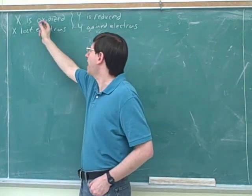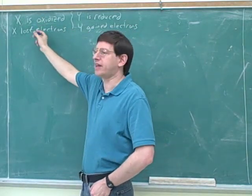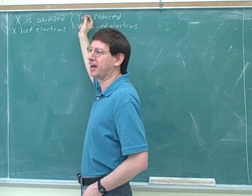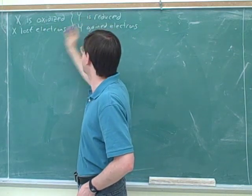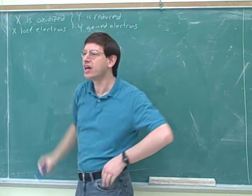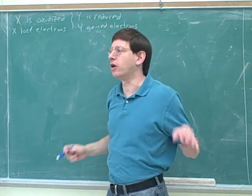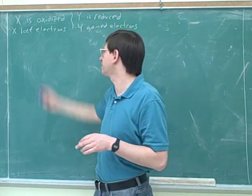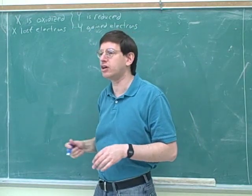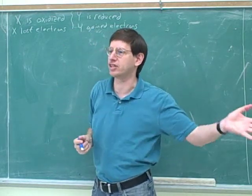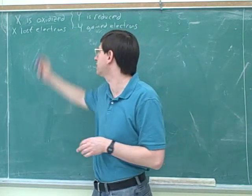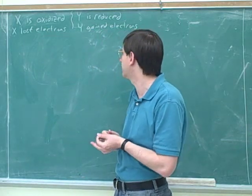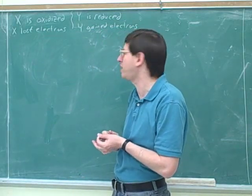If X lost the electrons, who took them? Y. And if Y gained the electrons, who did it take them from? X. That's why these are called redox reactions — because any reaction that involves oxidation also involves reduction. Whoever is losing the electrons must give them to somebody who gains them. These have to go together as a pair.